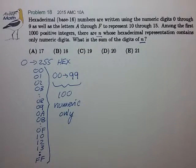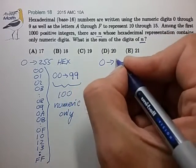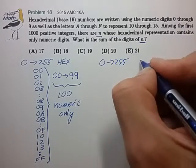And that's a kind of a helpful stepping stone to solving this problem. So from 0 to 255 we have 100 digit only numbers.